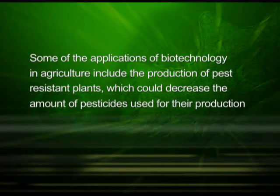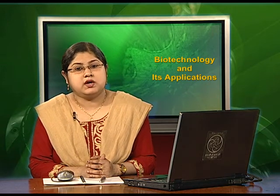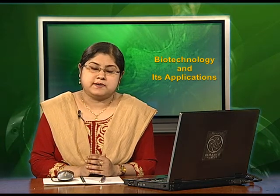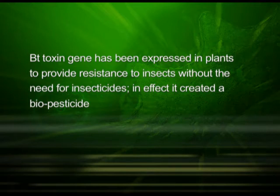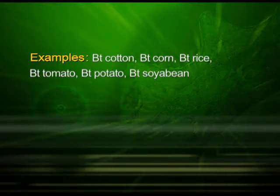Some of the applications of biotechnology in agriculture include the production of pest resistant plants, which could decrease the amount of pesticides used for their production. Let us study about Bt toxin. It is produced by a bacterium called Bacillus thuringiensis. The Bt toxin gene has been cloned from the bacteria and expressed in plants to provide resistance to insects without the need for insecticides, effectively creating a biopesticide. Some examples of pest resistant plants are Bt cotton, Bt corn, Bt rice, Bt tomato, Bt potato and Bt soya bean.